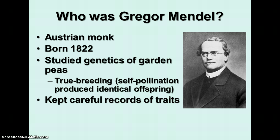The first thing we need to talk about is Gregor Mendel. Gregor Mendel was an Austrian monk. He was born in 1822, and he studied the genetics of garden peas. There's a big advantage to using garden peas — they're pretty inexpensive and you can use the product of them; you can eat them. Another big advantage is that they're true breeding, meaning they normally self-pollinate, and self-pollination of the true breeding lines will produce identical offspring to the parent.